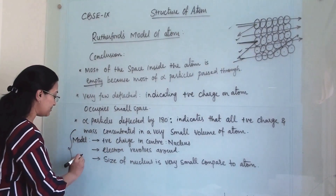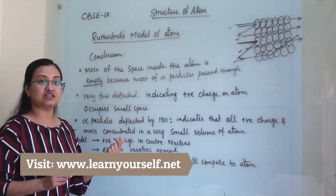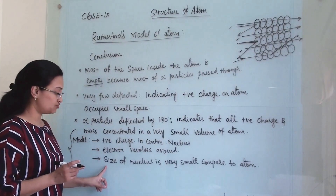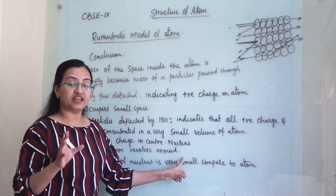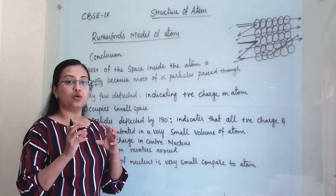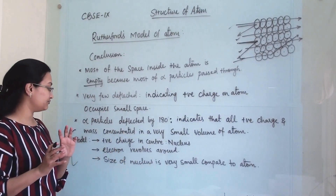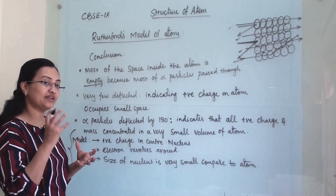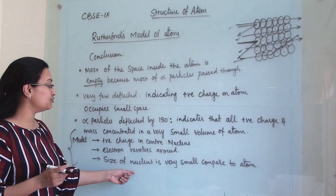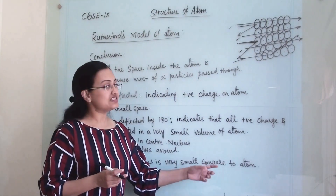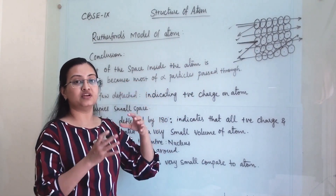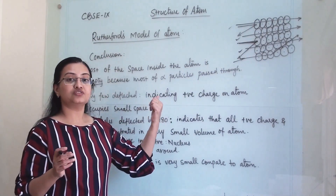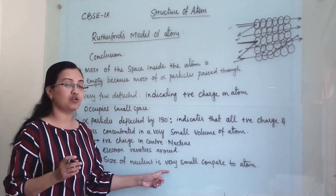Rutherford then proposed a model with three key points. First, positive charge is concentrated at the center, which he named the nucleus, and all mass is accumulated there. Second, electrons revolve around the nucleus. Third, the size of the nucleus is very small compared to the atom — that is why very few rays rebounded; if the nucleus occupied more space, far more particles would have bounced back.